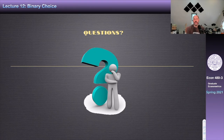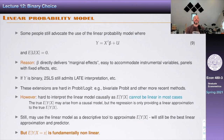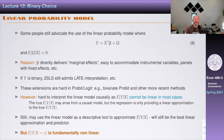We're getting to the end of today's class. Let's talk about the linear probability model. Some people still advocate writing Y = X prime beta plus U, assuming conditional mean independence, applying OLS, and treating Y as binary mechanically. One reason for this is that beta directly delivers marginal effects.